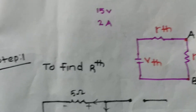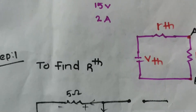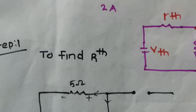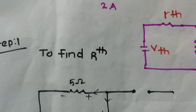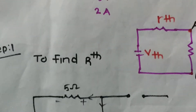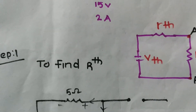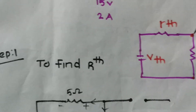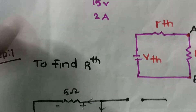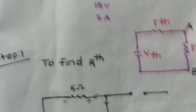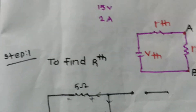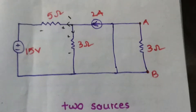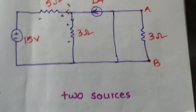We already have a previous video on Thevenin's theorem — the link is in the description. That previous video explains it in detail. So now let's find the Rth value. This is the circuit we want to use to find Rth.